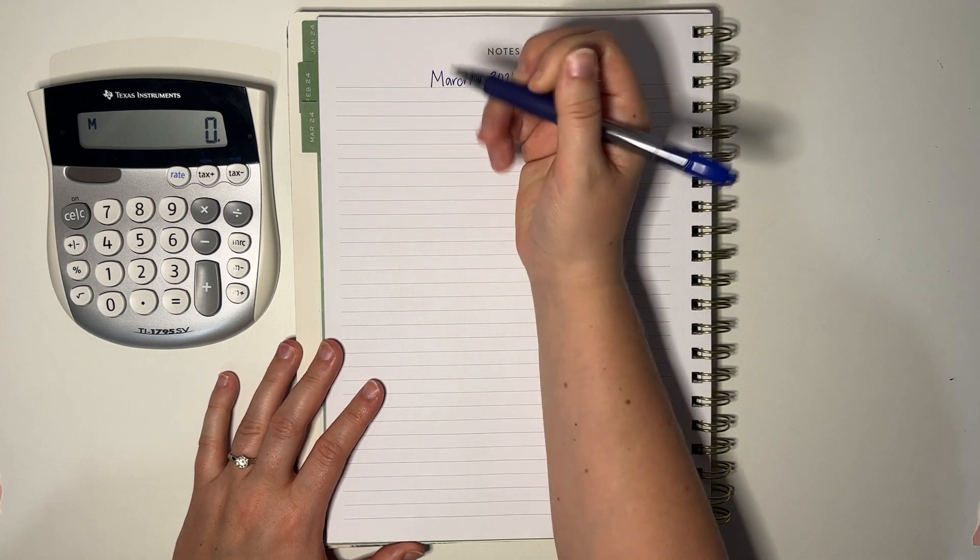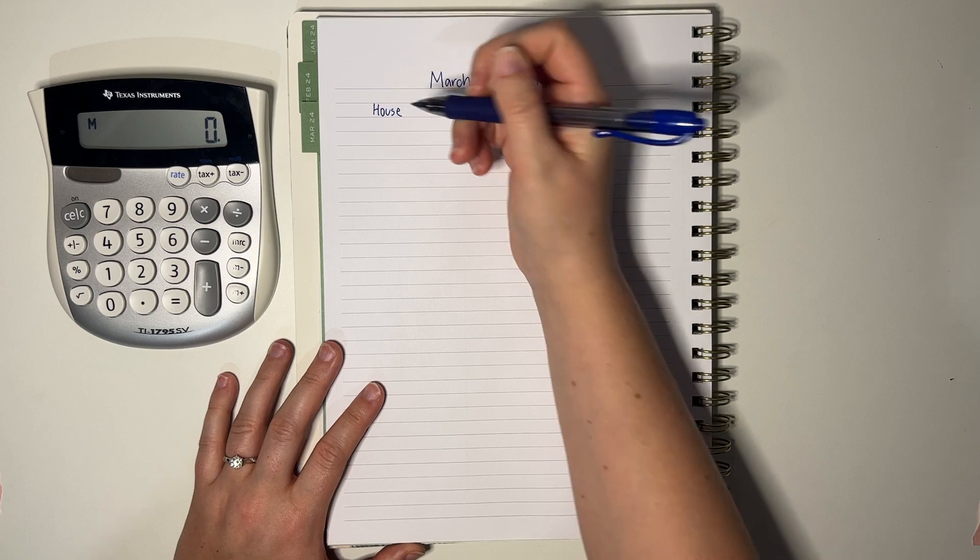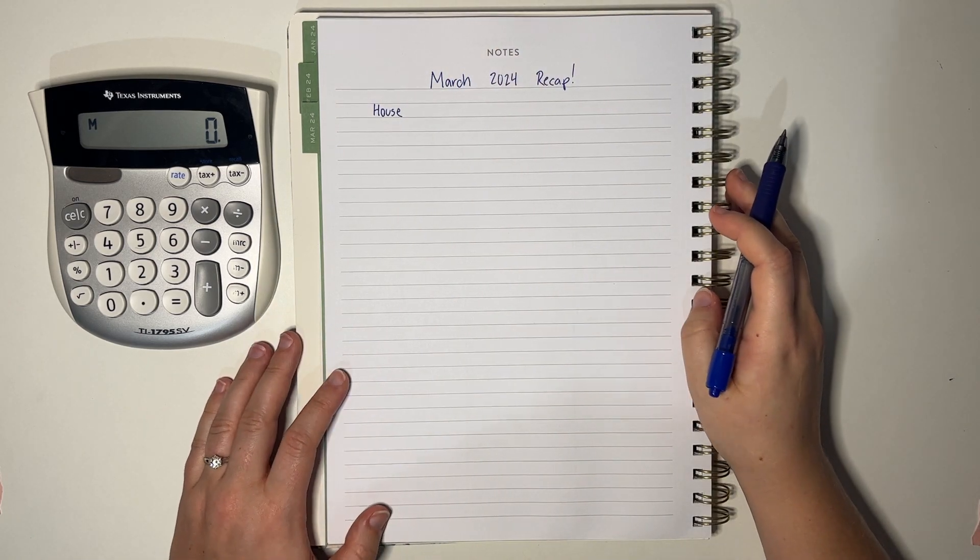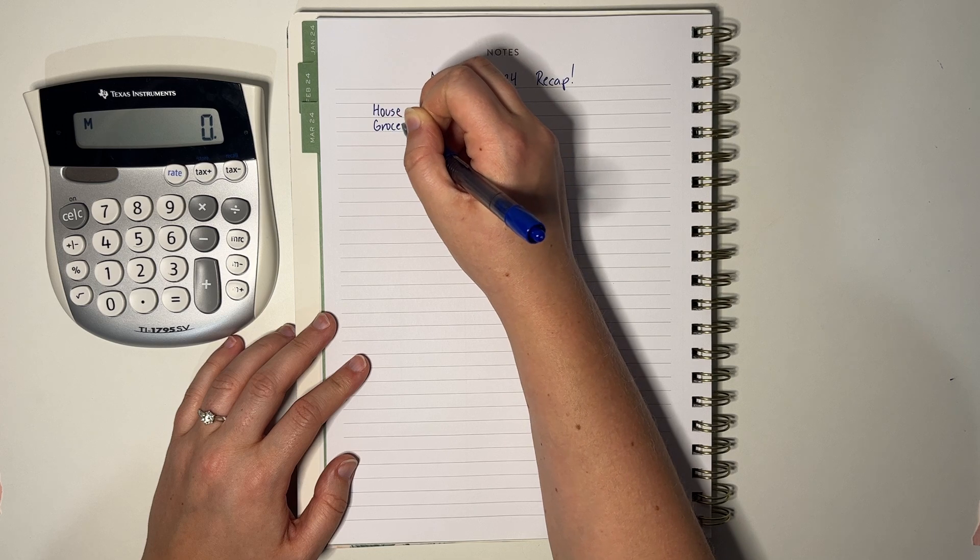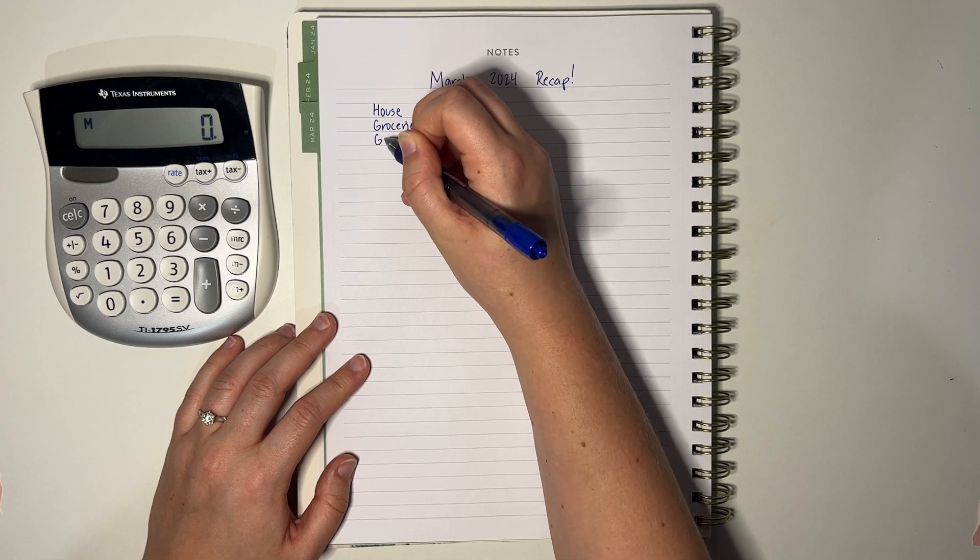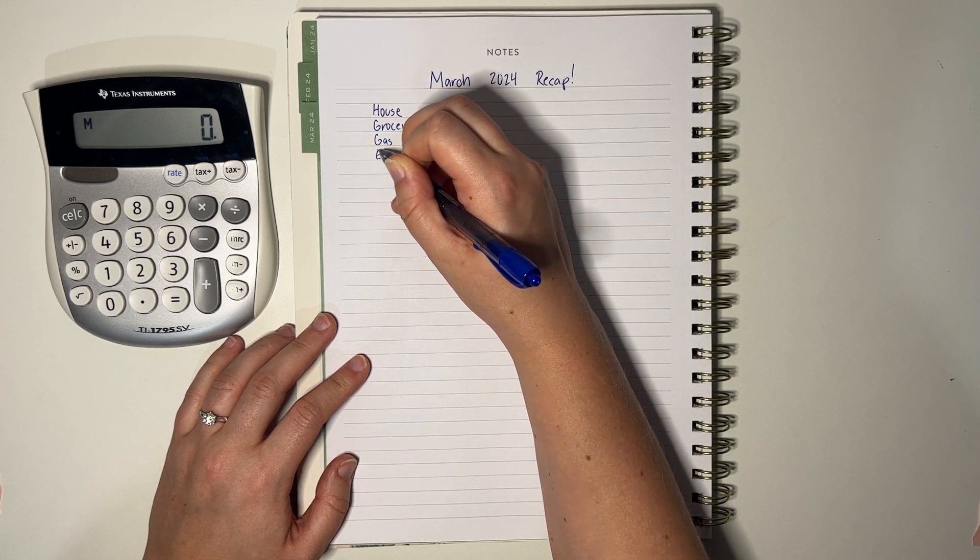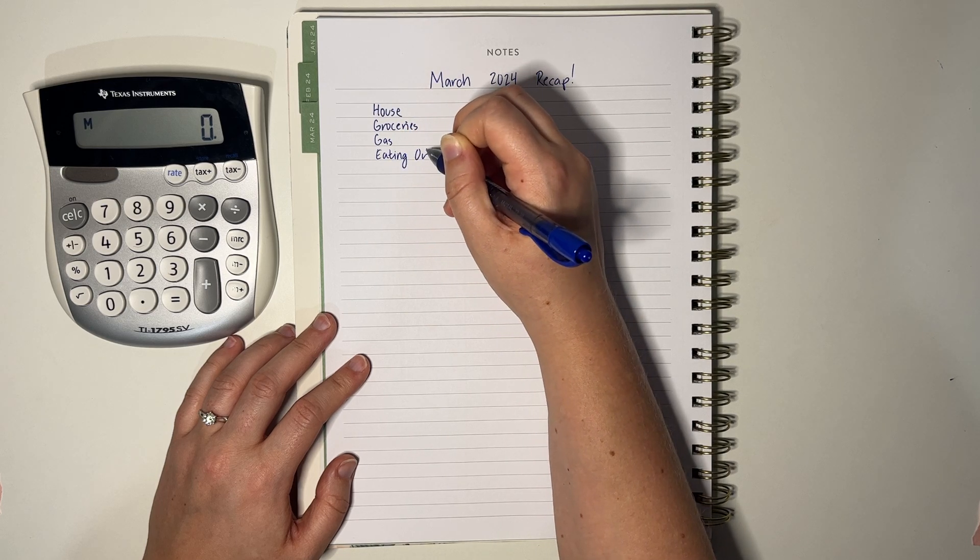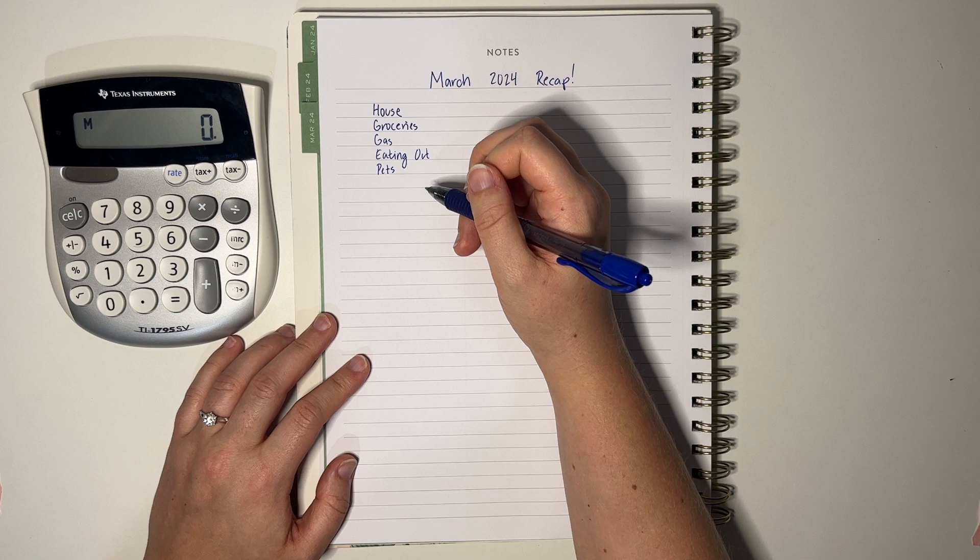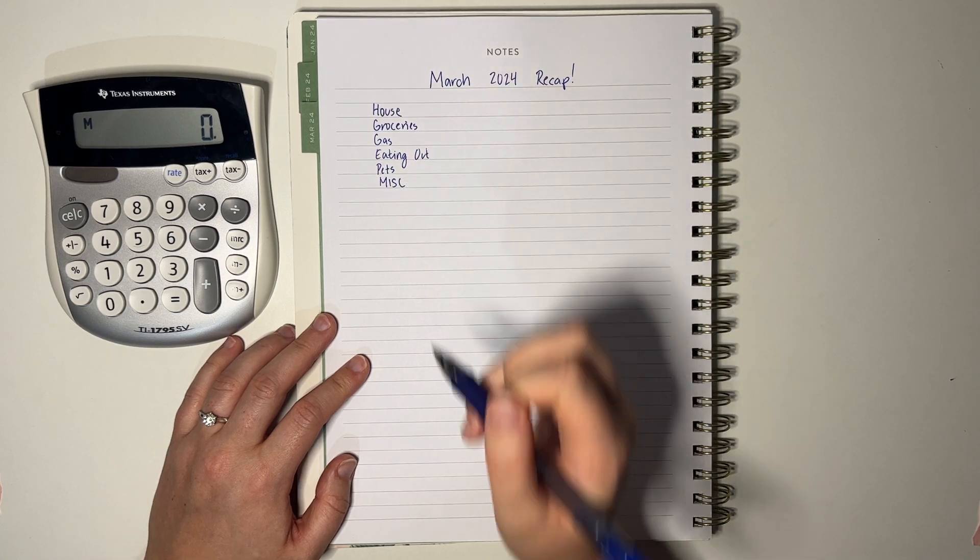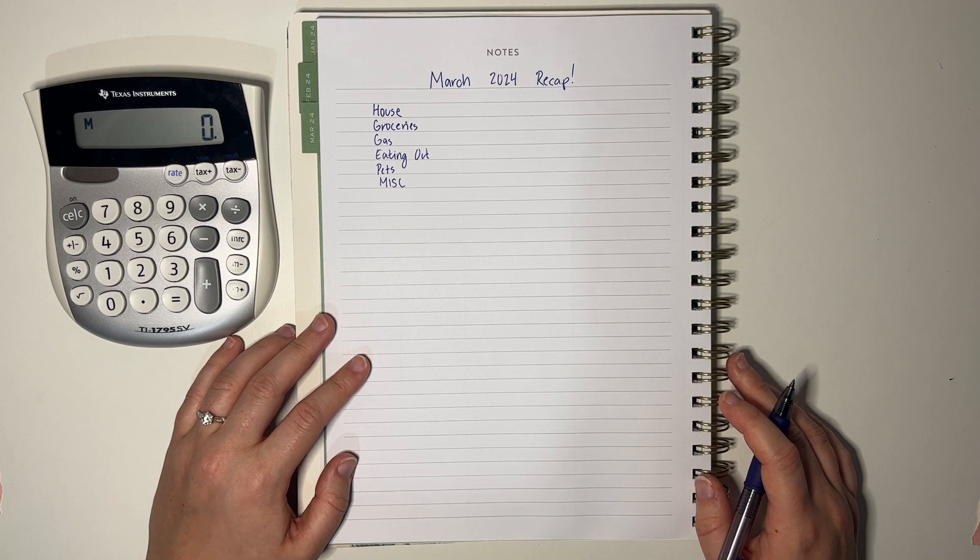But let's do it. So we have house. This is rent mostly. But we also pay internet. And we have an Apple subscription for like $1 a month. I think it's storage for my work. So I couldn't really tell you. Got groceries. We have gas. We got eating out. Pets. Miscellaneous. And I think that's it.